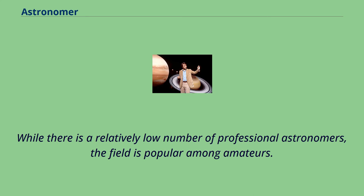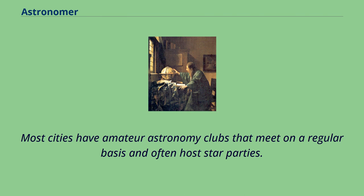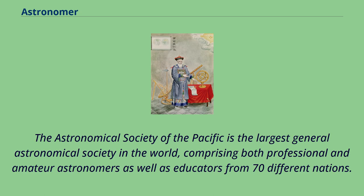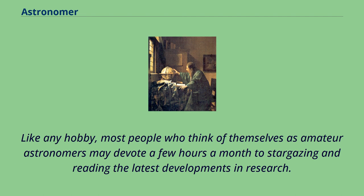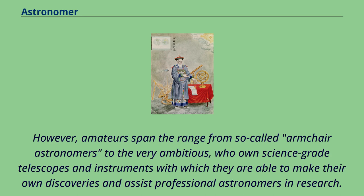While there is a relatively low number of professional astronomers, the field is popular among amateurs. Most cities have amateur astronomy clubs that meet on a regular basis and often host star parties. The Astronomical Society of the Pacific is the largest general astronomical society in the world, comprising both professional and amateur astronomers as well as educators from 70 different nations. Amateurs span the range from armchair astronomers to the very ambitious, who own science-grade telescopes and instruments with which they are able to make their own discoveries and assist professional astronomers in research.